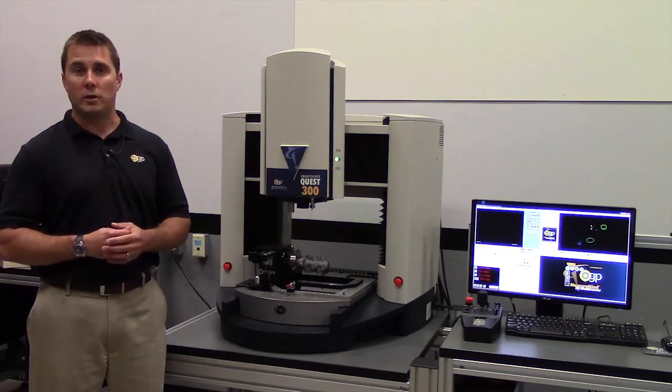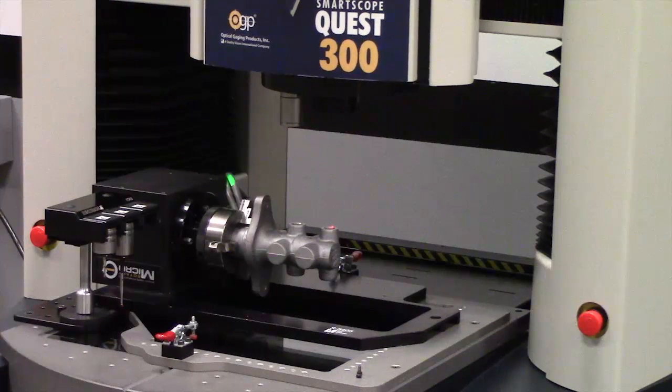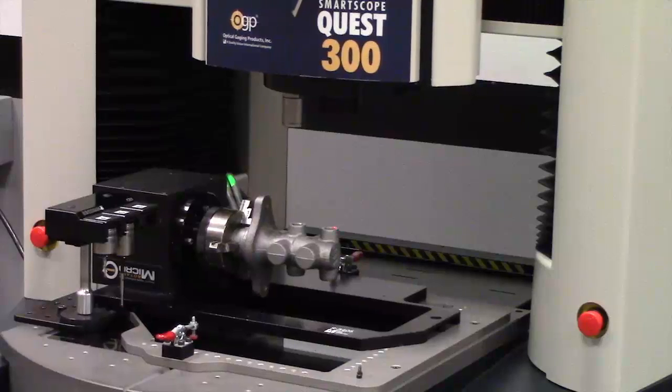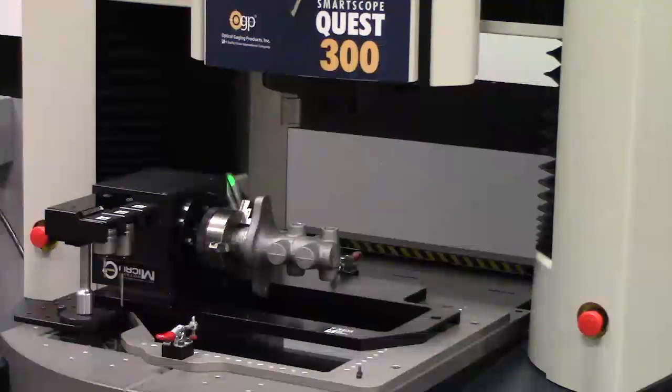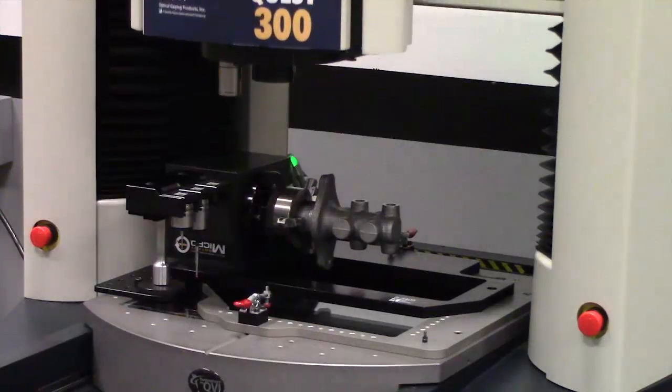The Quest 300 can be equipped with a variety of sensors to accommodate the most difficult applications. The Quest 300 comes standard with OGP's patented Telestar 10-to-1 zoom lens. It is one of the only benchtop systems equipped with a scanning probe.